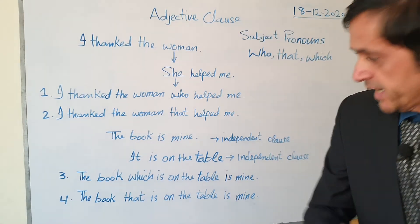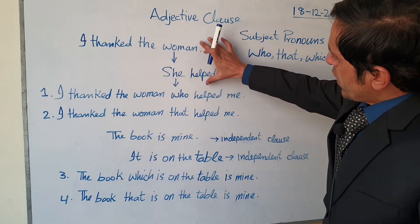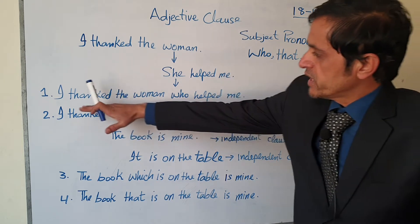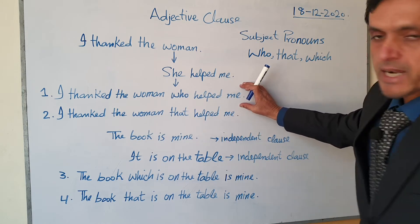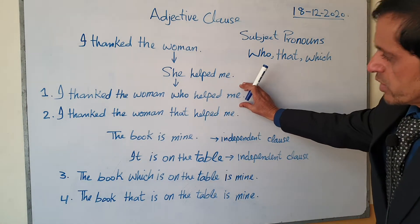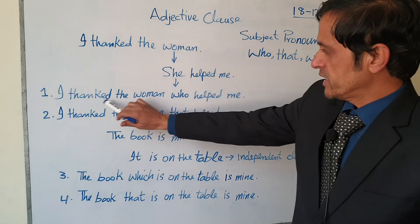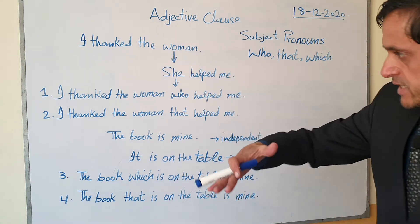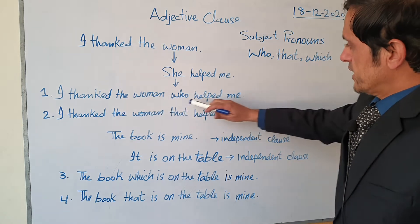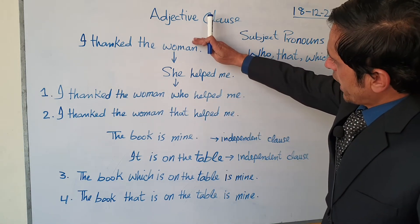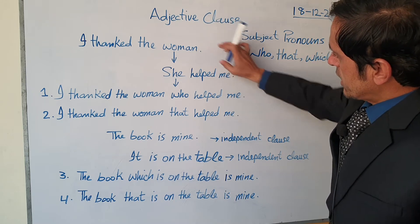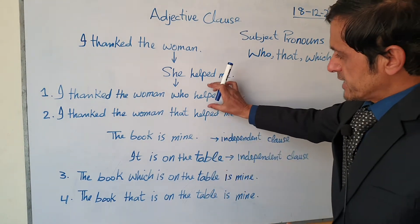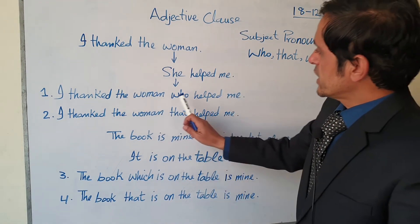So when we want to make these two independent clauses into a dependent clause structure, we make this structure. And this is basically a complex sentence, because a complex sentence always includes one independent clause and one dependent clause. So the whole structure is a complex sentence — this is the independent clause, and this is the dependent clause.